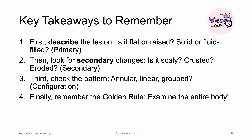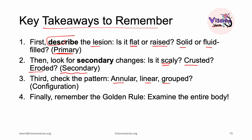A quick summary of key takeaways: first, describe the lesion — is it flat, raised, solid, or fluid-filled? That identifies the primary lesion. Second, look for secondary changes — is it scaly, crusted, or eroded? Third, check the pattern — is there an annular, linear, or grouped/clustered arrangement? And lastly, remember the golden rule: examine the entire body. If you see a lesion on the trunk, also check the hair, scalp, nails, and sometimes the anogenital area and oral mucosa.